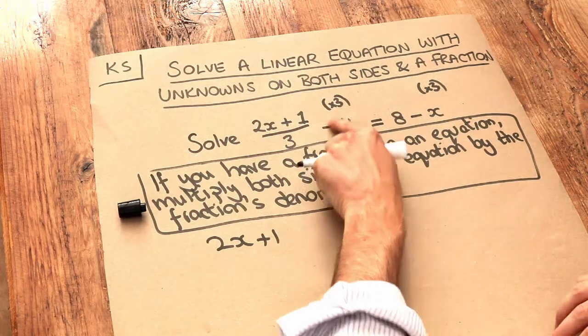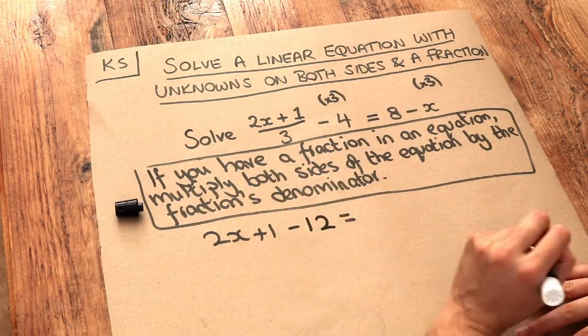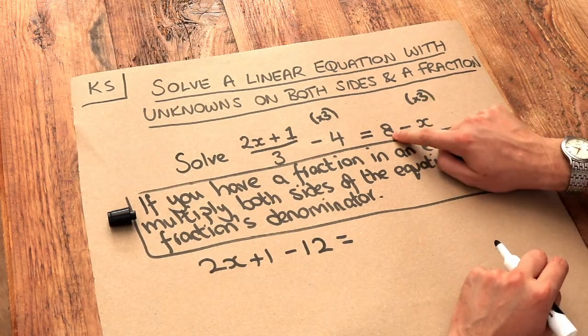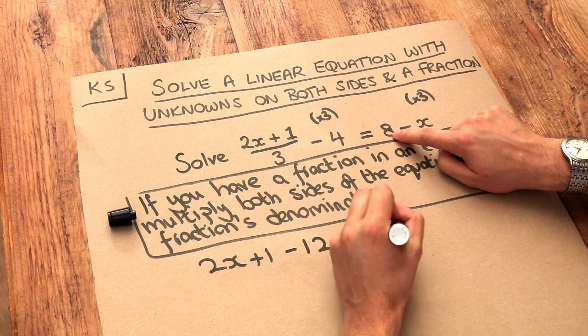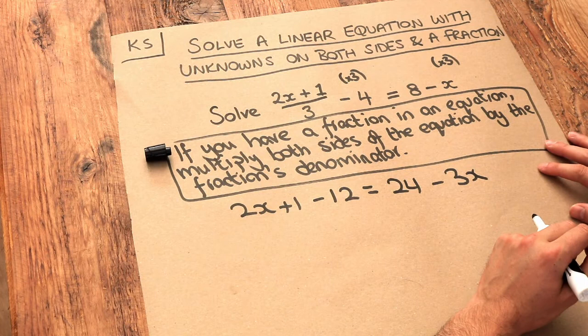And then don't forget to times that minus 4 by 3 as well, and that's another common mistake that students make. On the right hand side, multiply each of these things by 3. 8 times 3 is 24, and then minus x times 3 is minus 3x. And now we've got a much simpler equation.